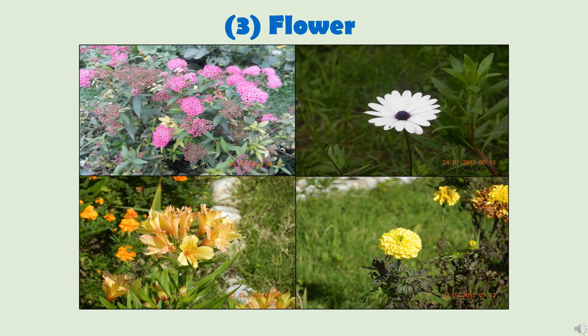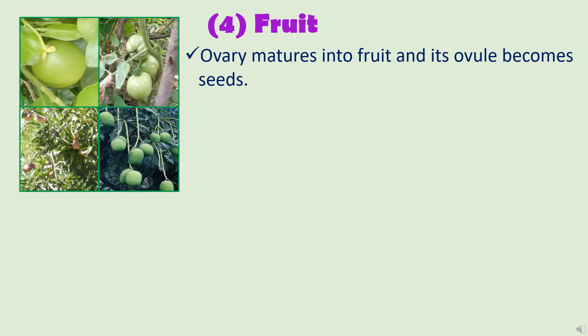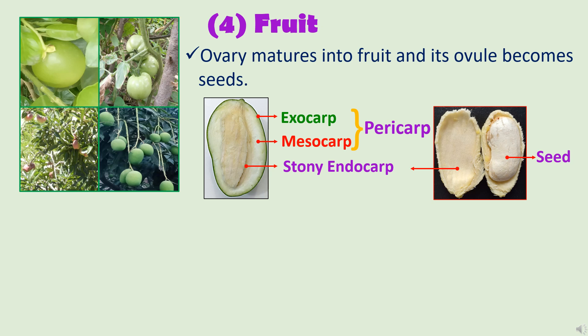The third part of the shoot system is the flower — a video on the structure and functions of the flower is already uploaded; you can check the description box for the link. The fourth part is fruit. After fertilization, the ovary matures into fruit and its ovule becomes the seed. Fruit has two main layers: pericarp and endocarp. The pericarp consists of the exocarp, which is the peel of the fruit, and the mesocarp, which is the middle fleshy layer — after ripening, the mesocarp becomes quite juicy and sweet. The innermost layer, the endocarp, protects the seed from the outer environment. In some fruits, it is stony and hard — examples are cherry, peach, and mango — while in others it is membranous, such as apple and peas.